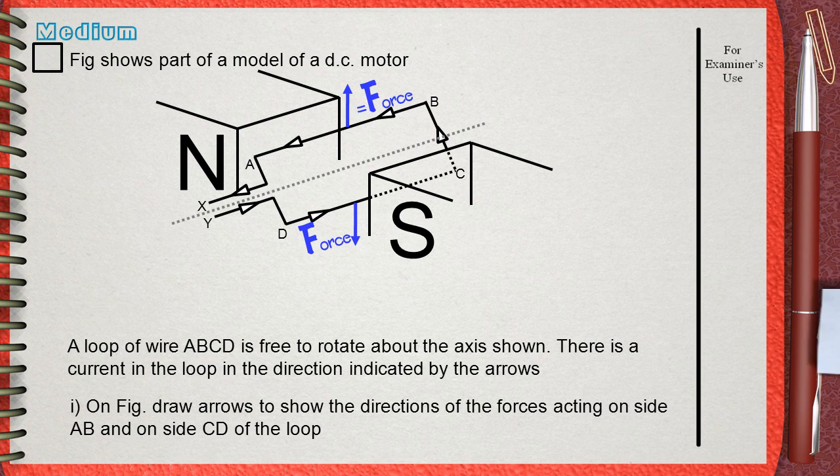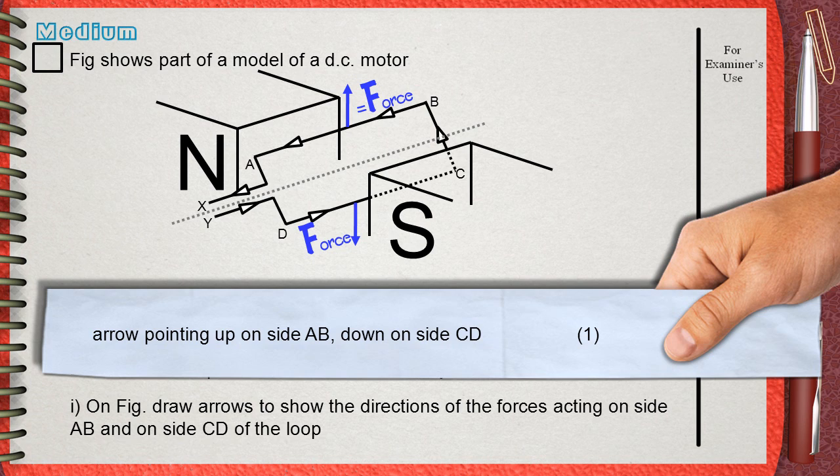And this is the answer in the mark scheme. Arrow pointing up on side AB and down on side CD. I think this question is a good practice of how to use Fleming's left hand rule on deciding the direction of pushing force on a wire.